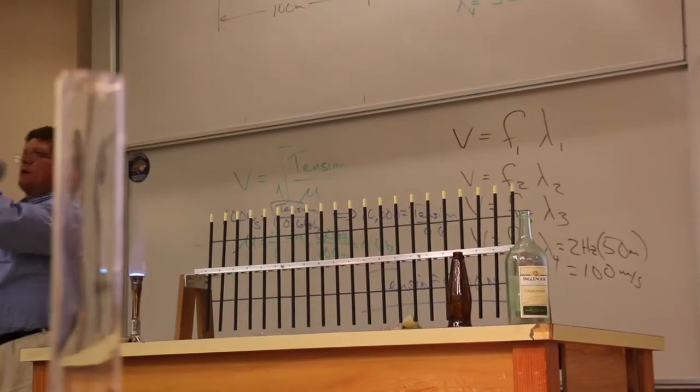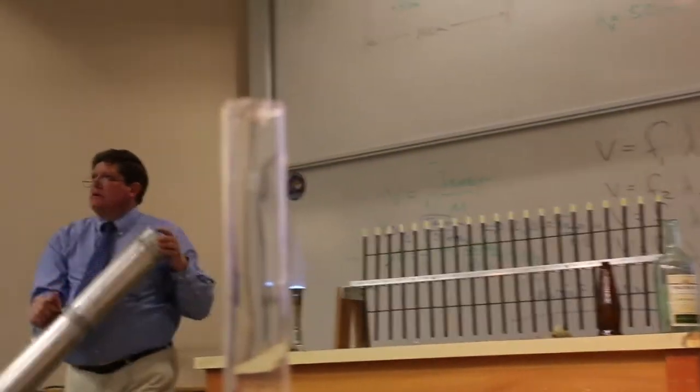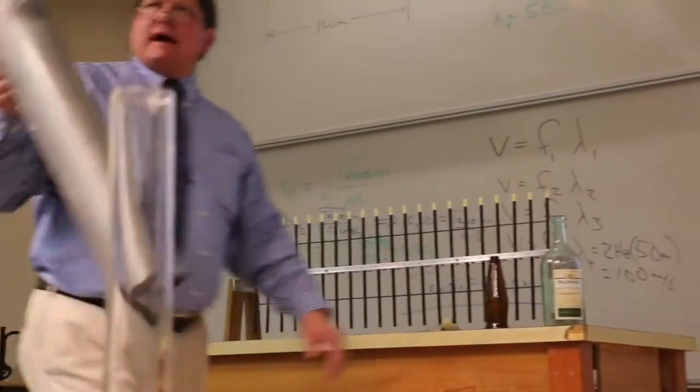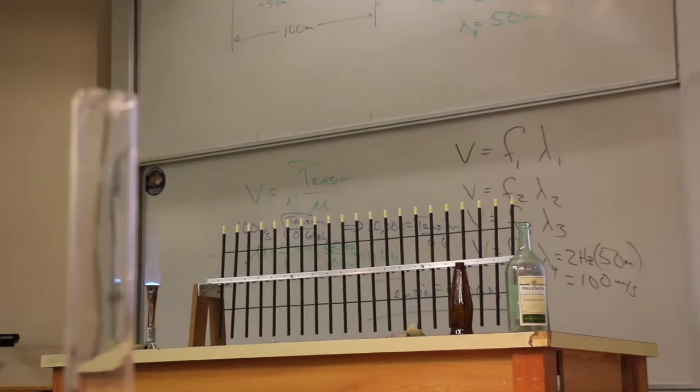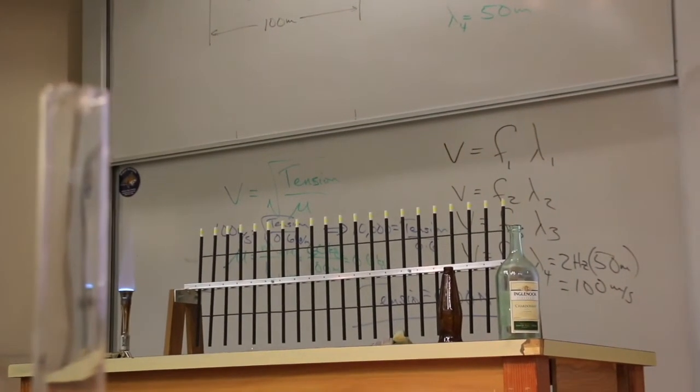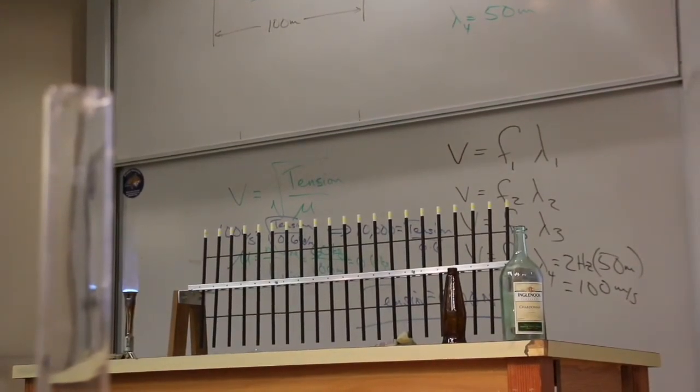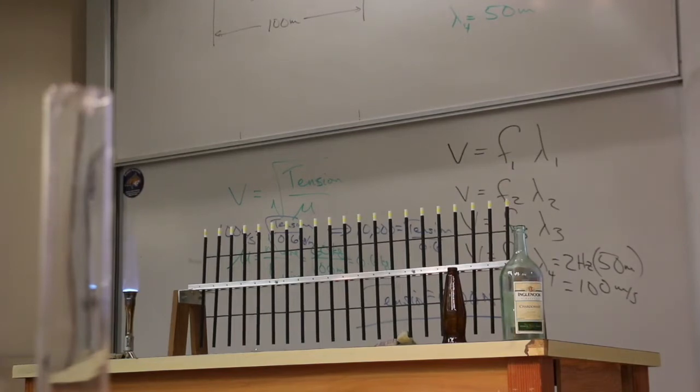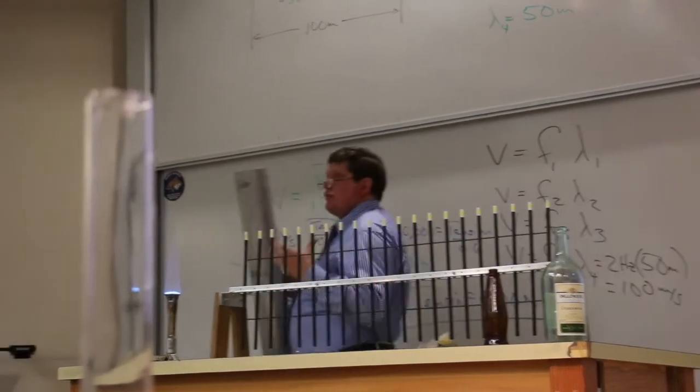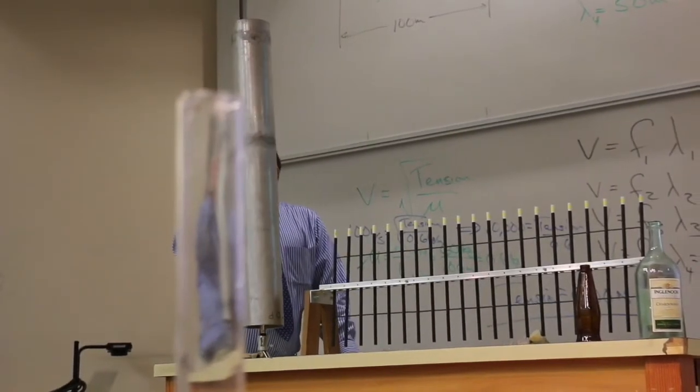This tube is open at both ends. So that means, at its fundamental, how many footballs am I going to have inside of this tube? One. It's going to be that one up there. It'll go from an antinode to an antinode. One football. That means the wavelength is going to be twice the length of this tube. And that is a particular wavelength with a particular frequency.